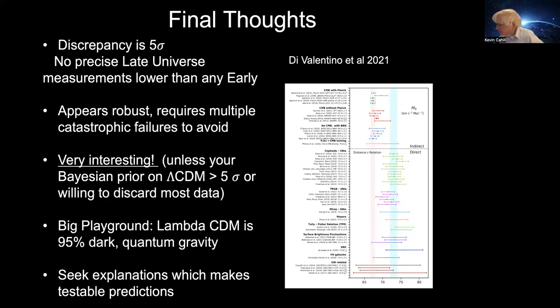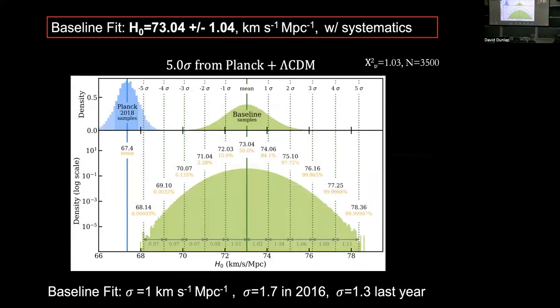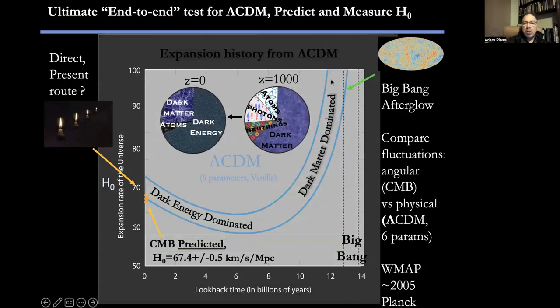Question: At the very beginning of the talk you showed 67.4 as the prediction assuming Lambda CDM. Is there a meaning to taking away the effect of Lambda — what would you predict without it? Answer: Basically, the expansion rate is decreasing and then at some point starts to increase again because of Lambda. If you didn't have Lambda and just had dark matter, it would decrease much more and you'd probably get a much lower Hubble constant.